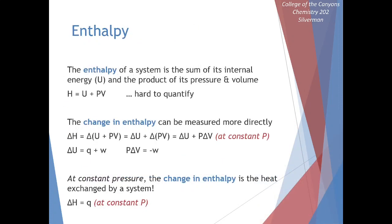A useful way to describe the energetics of our system is enthalpy. Perhaps this is a review — we've seen this term before. The enthalpy of a system is defined as the sum of internal energy and pressure times volume. Enthalpy is given the symbol H, so H = U + PV. This is hard to measure directly, but if we think about the change in enthalpy — delta H — this is something we can actually measure much more directly.